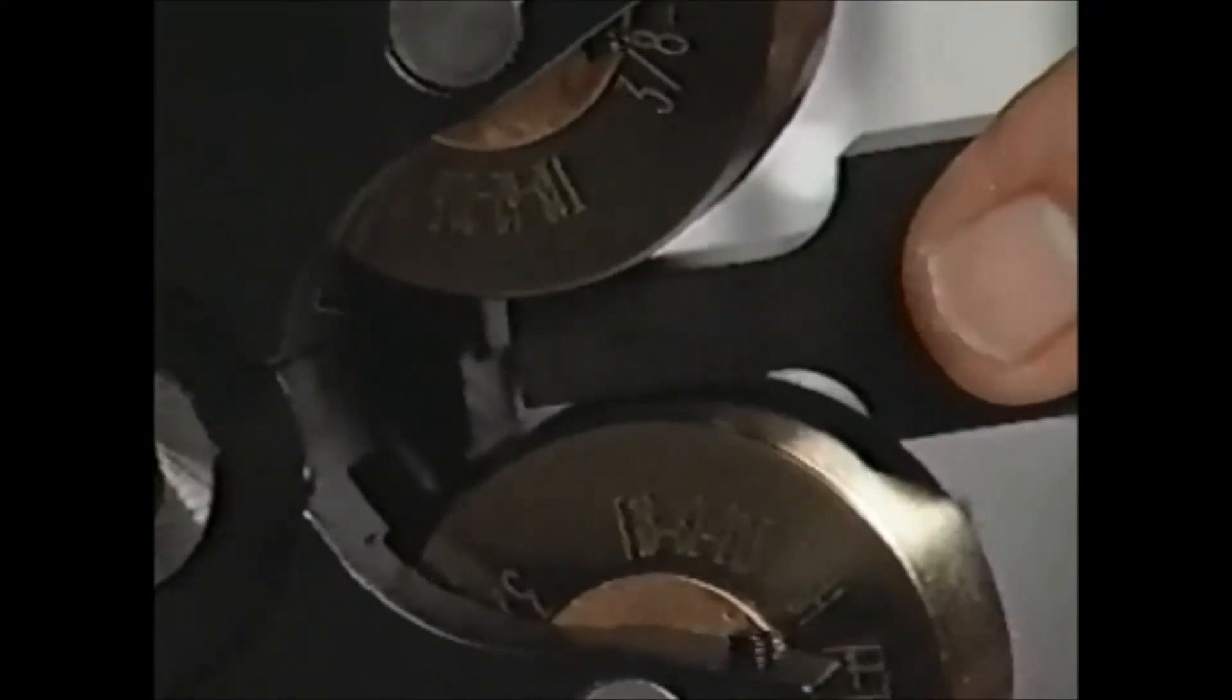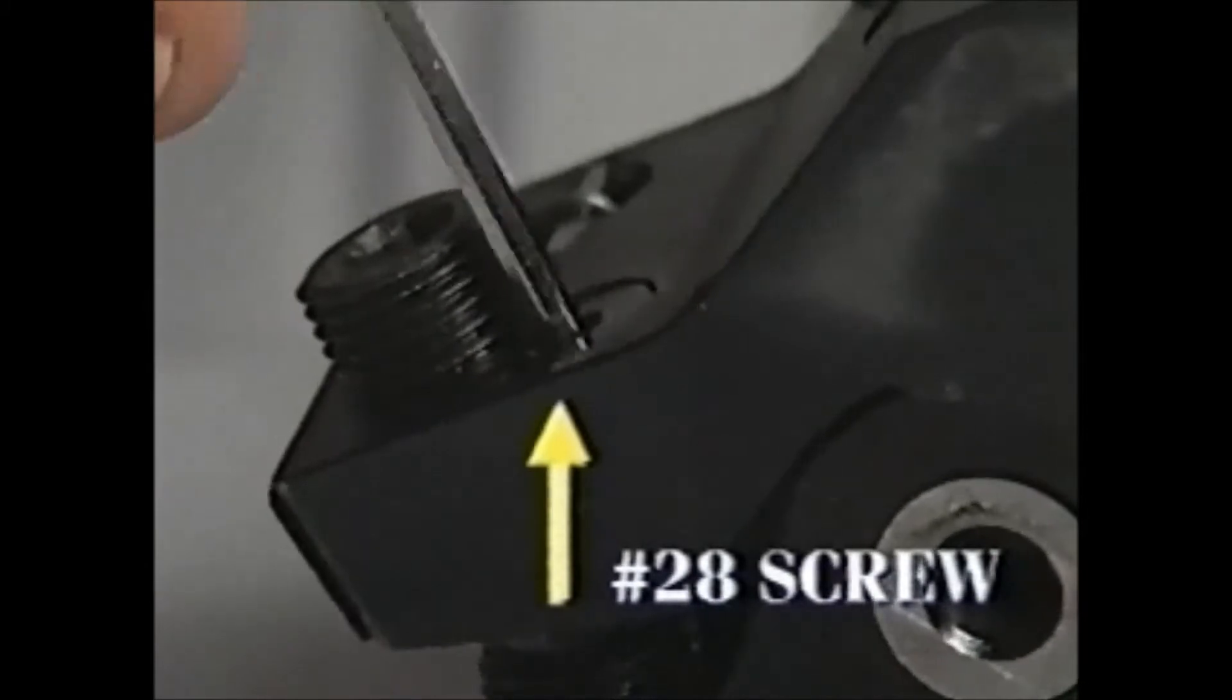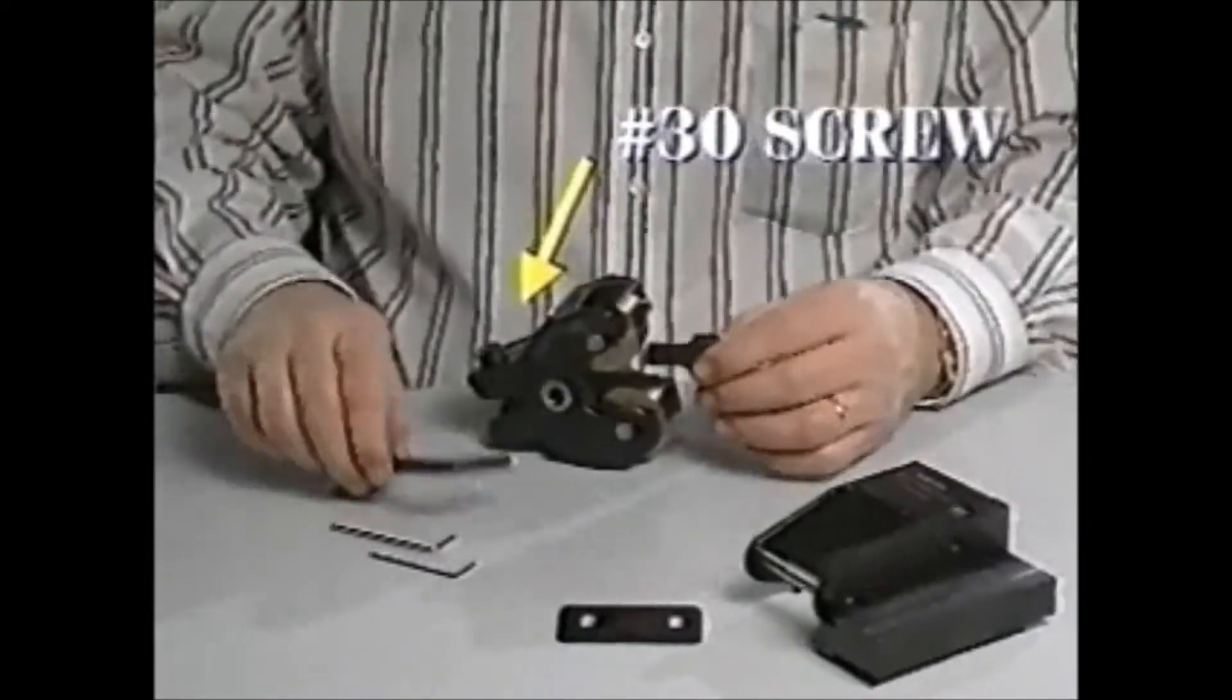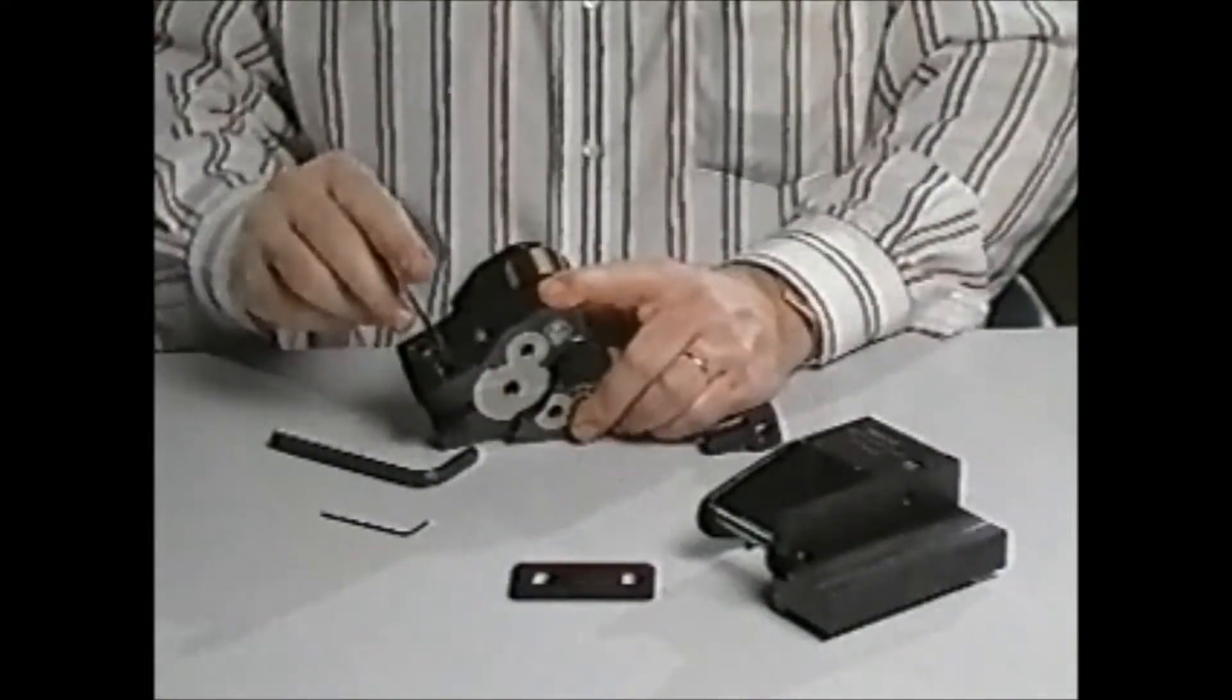Insert the setting master between rolls in the attachment. Loosen the number 28 screw and adjust the number 30 screws equally until they make a snug fit over the gauge. Then tighten the number 28 screw.